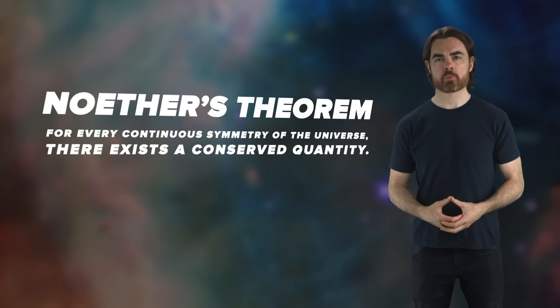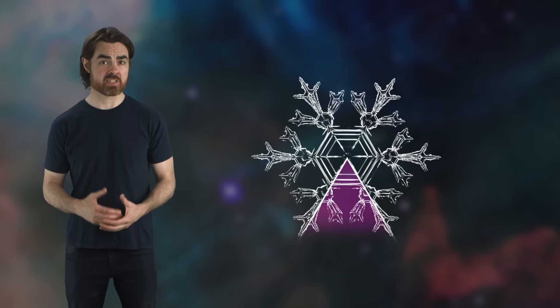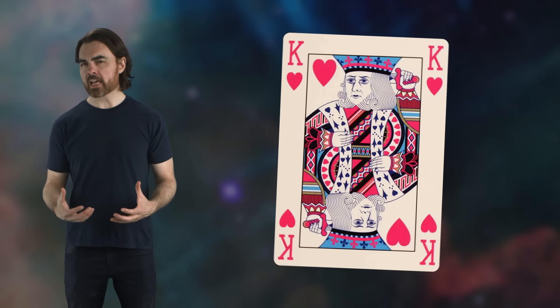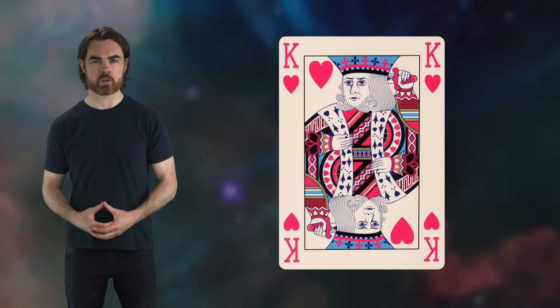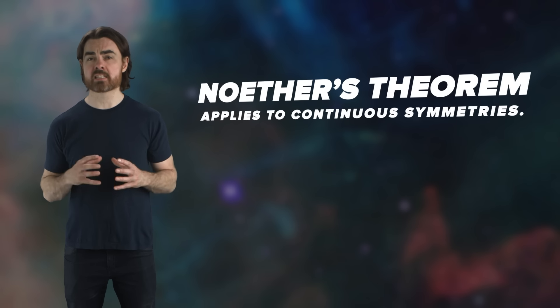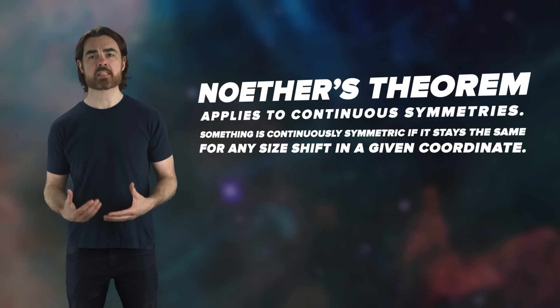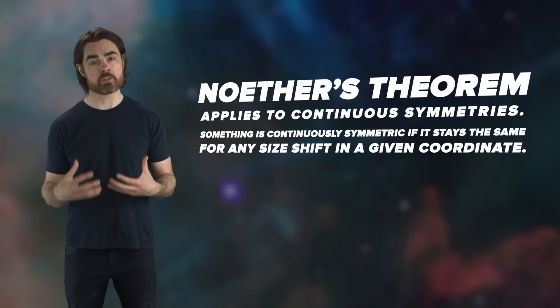Let's unpack this. First, what do we mean by symmetry? Actually, first, what don't we mean? We say a face is symmetric if it looks the same under a mirror reflection. Snowflakes are symmetric under 60 degree rotation. Playing cards under 180 degree rotation. But these are what we call discrete symmetries, single flips around one axis, or rotation by specific amounts. Noether's theorem applies to continuous symmetries.